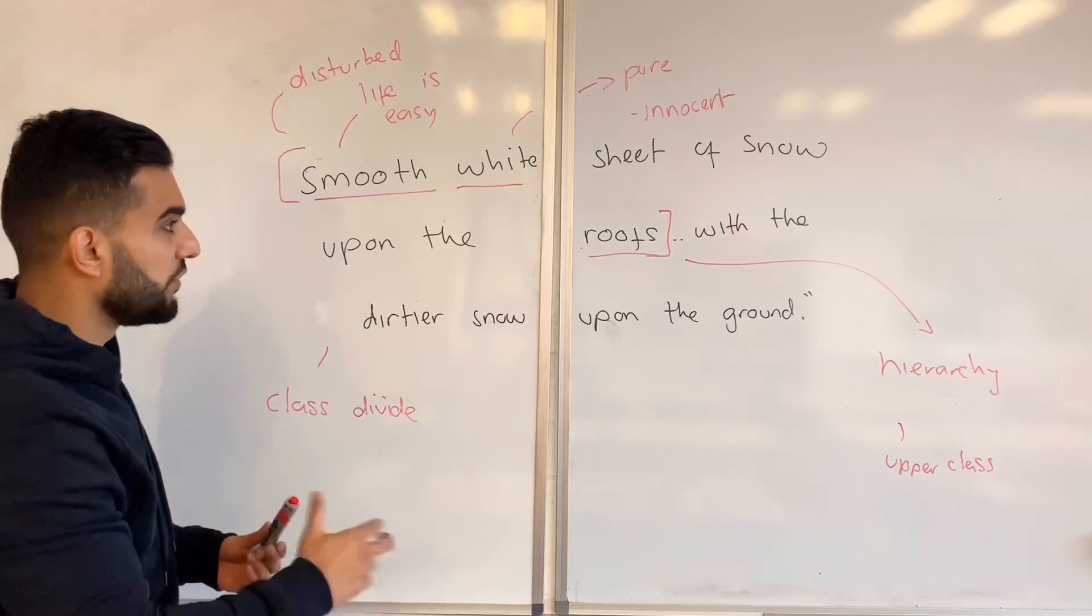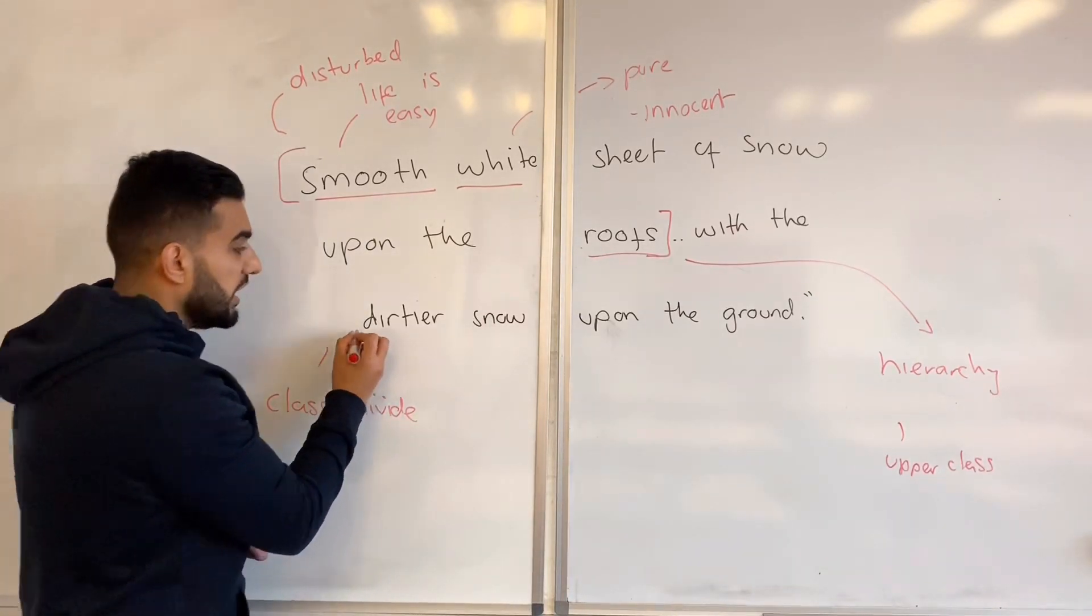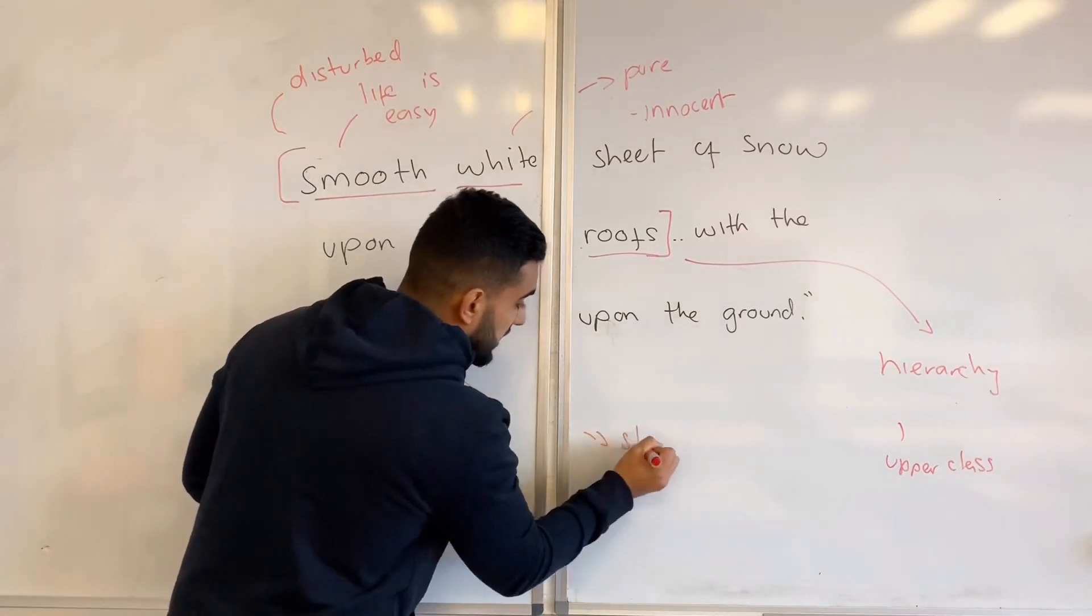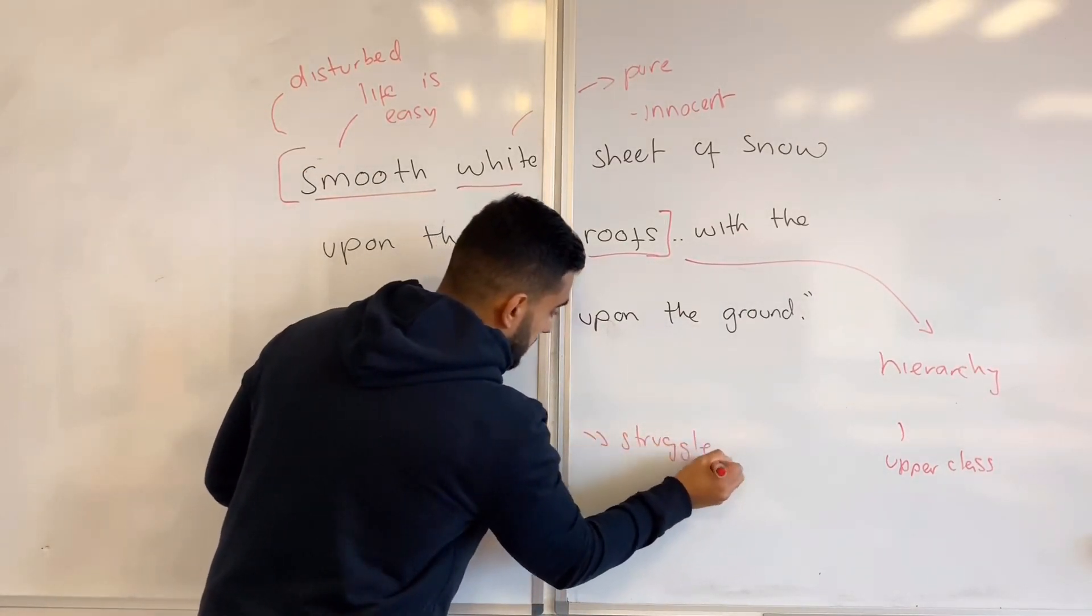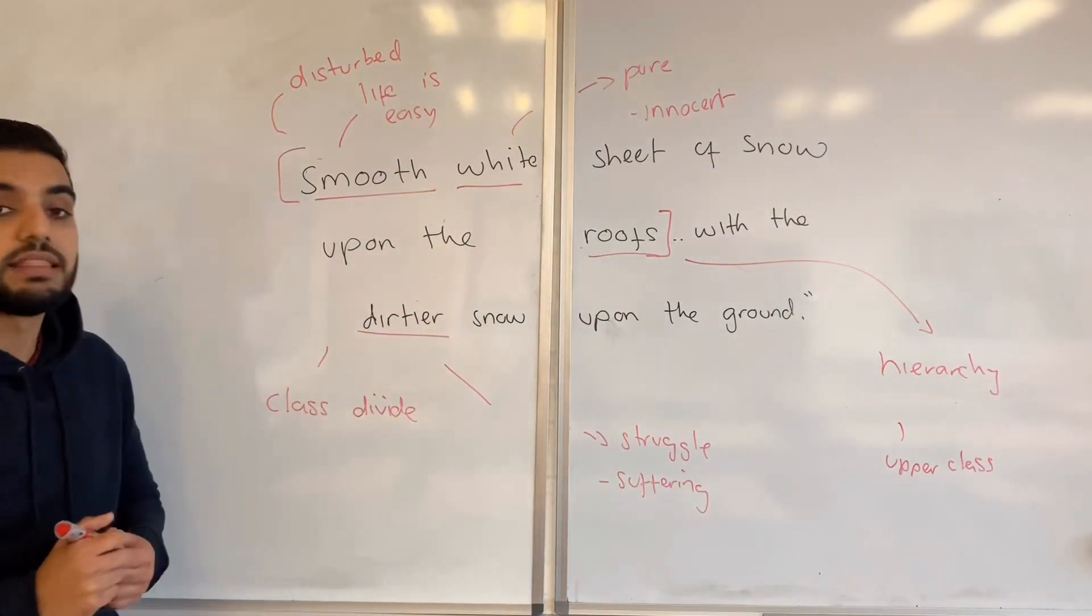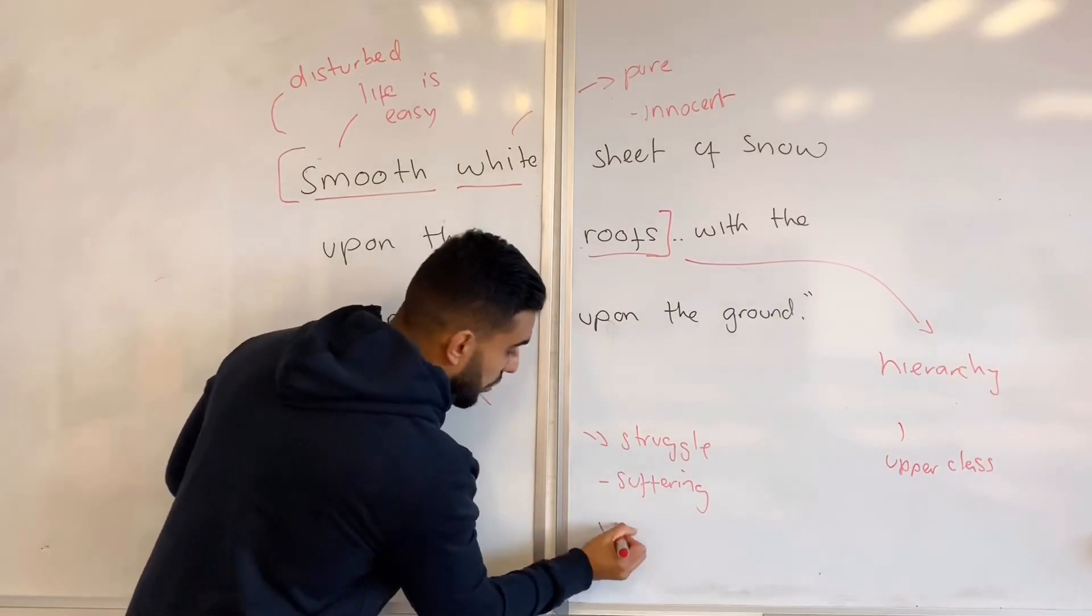Whilst the snow upon the ground - what is it? Very straightforward. The snow upon the ground is dirty, it is struggling, it is suffering, and that is what represents the lower class.